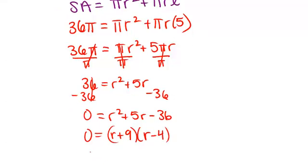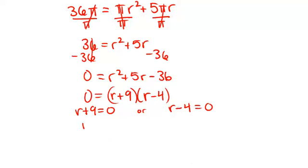So that means that my two answers are r plus 9 equals 0, or r minus 4 equals 0, which means that r equals negative 9, which doesn't really make sense, or r equals 4.